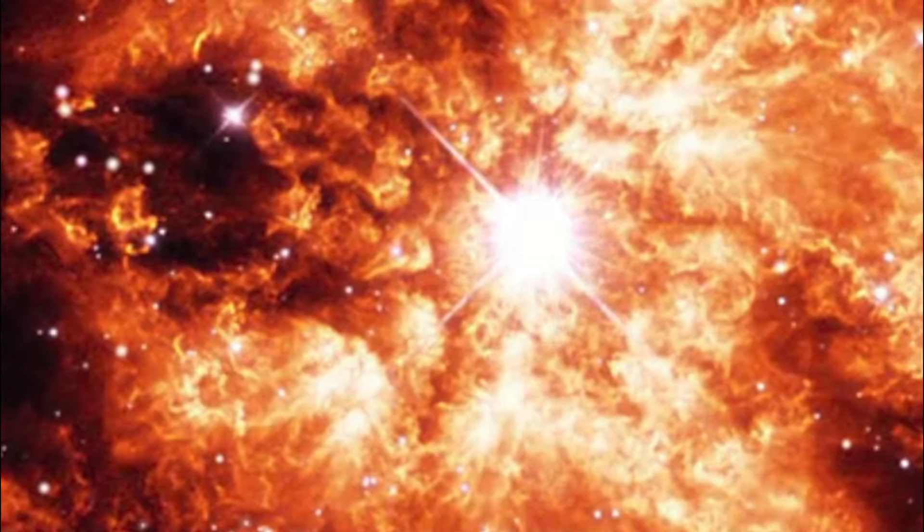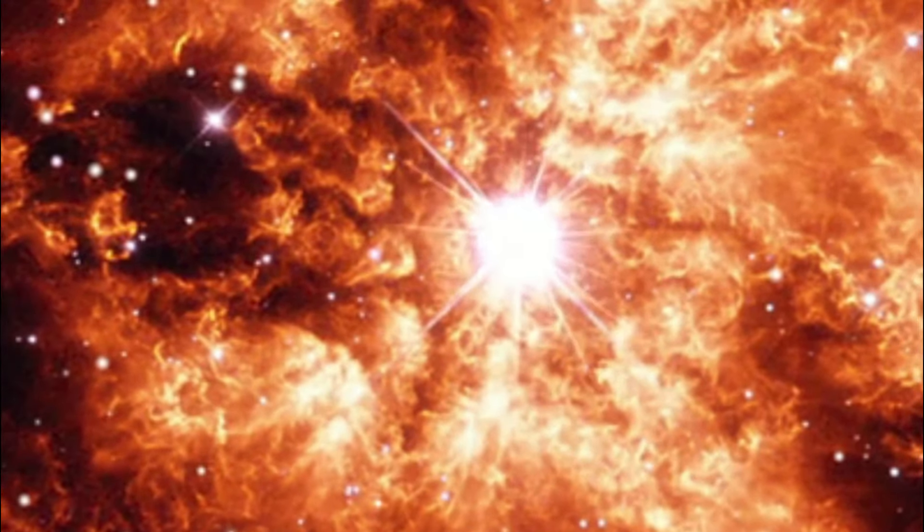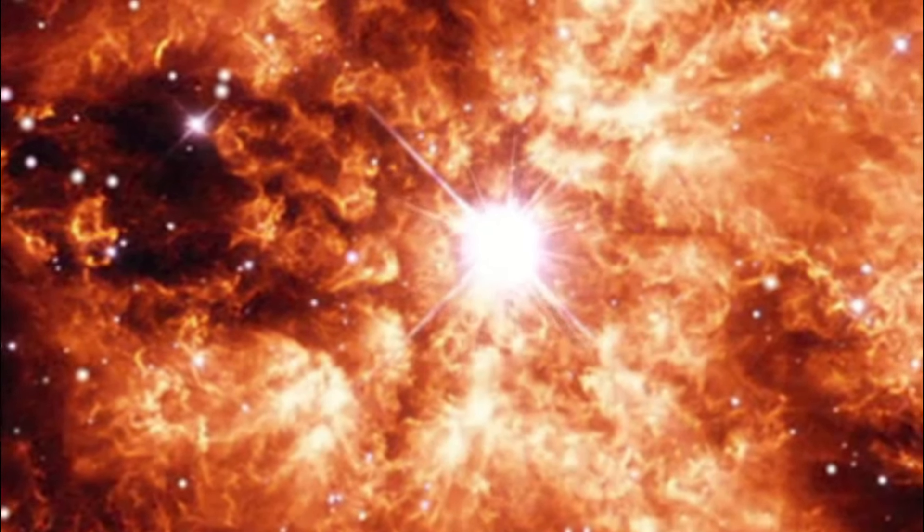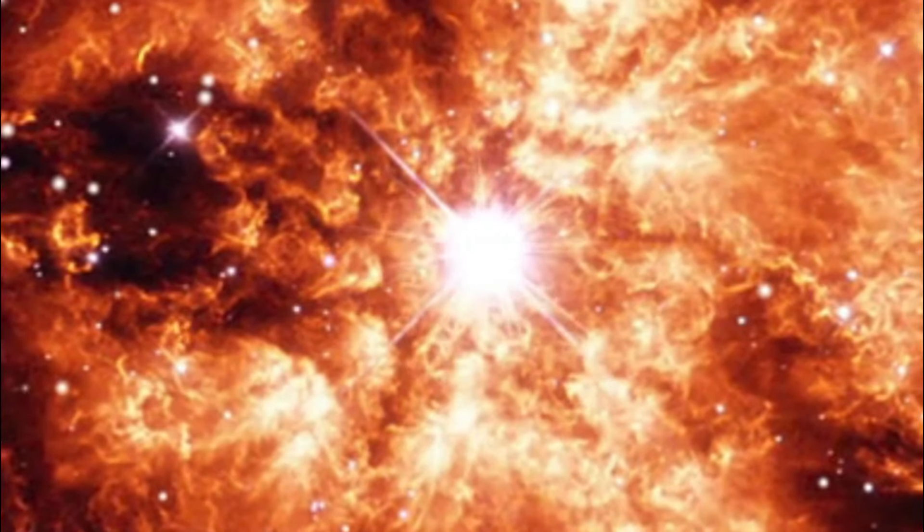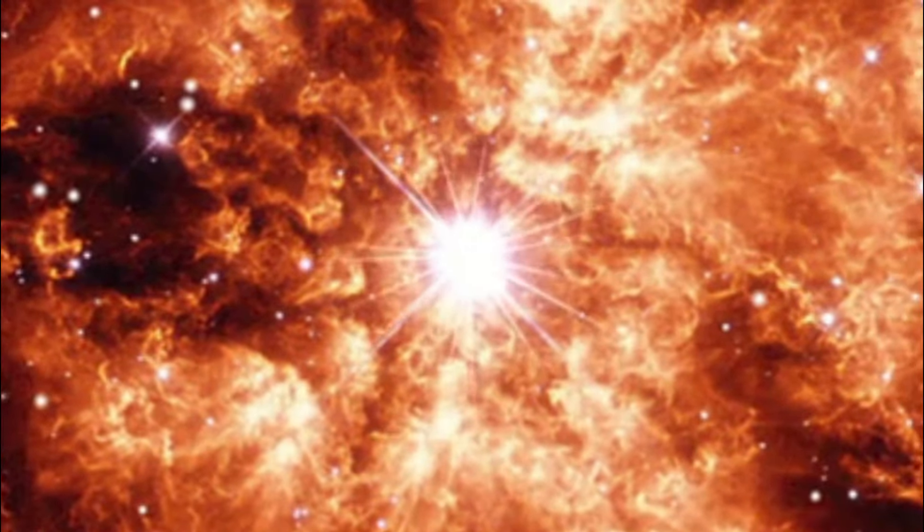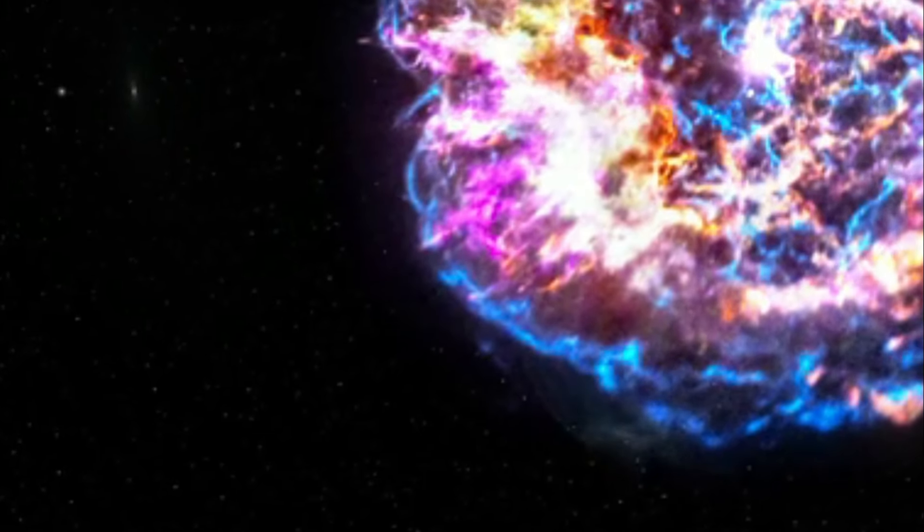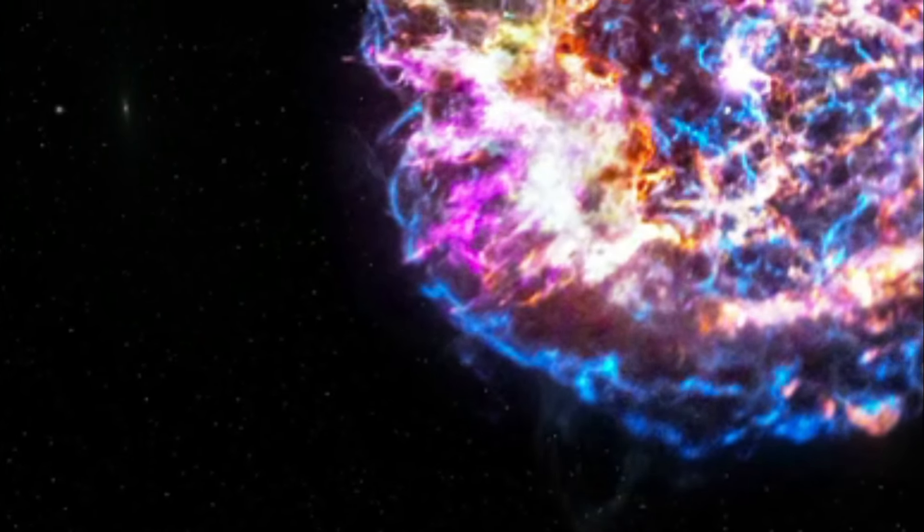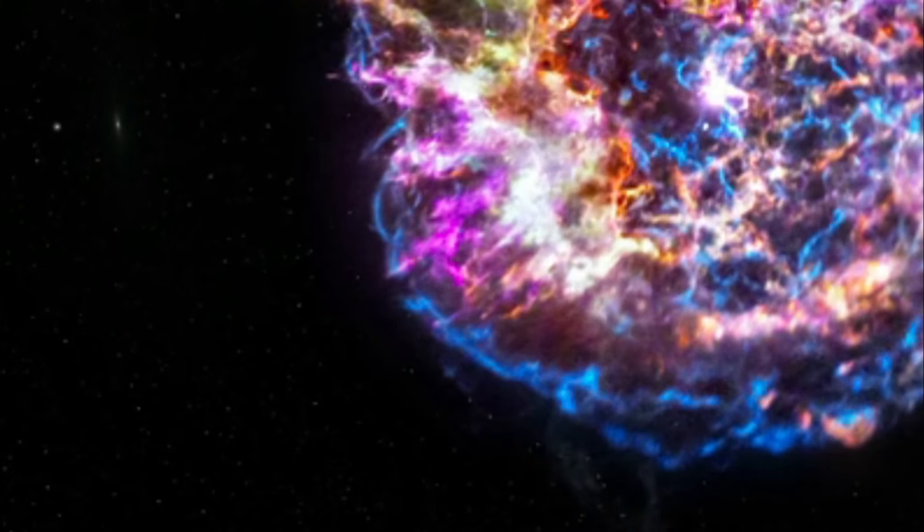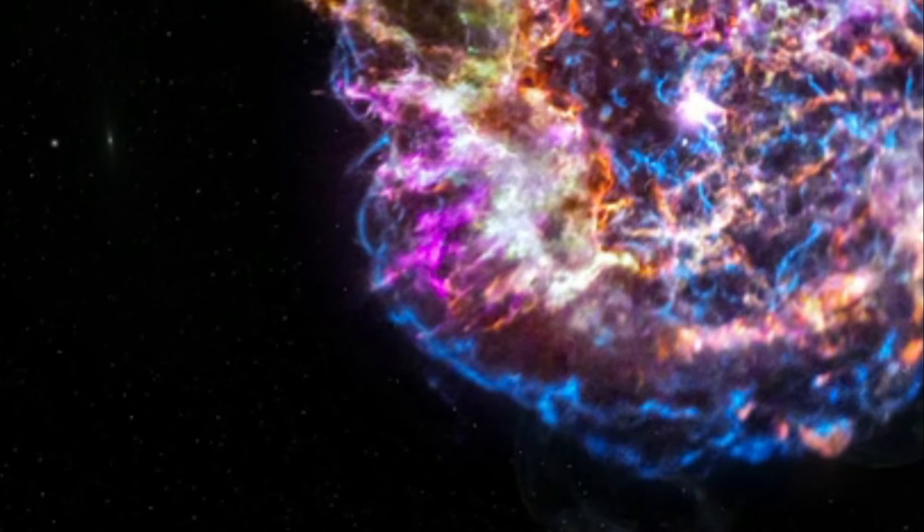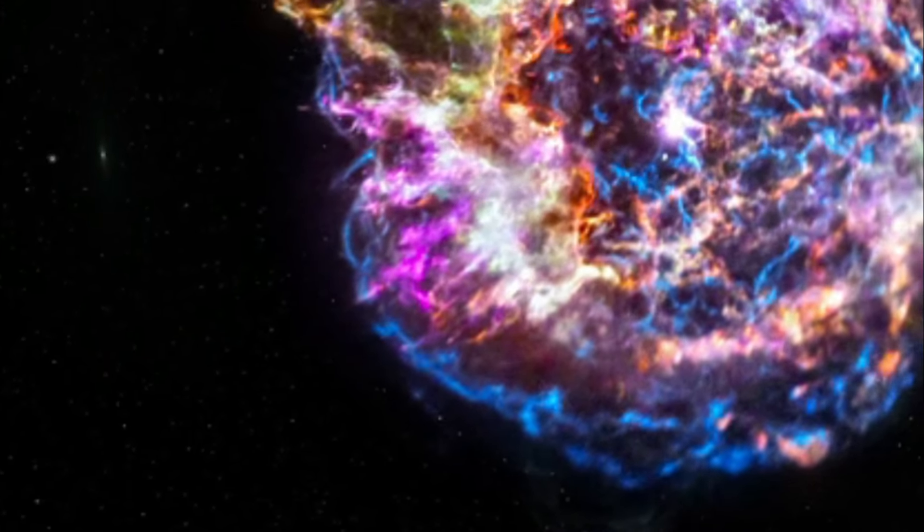Webb began science observations in July 2022, and the Webb observations behind this work were taken on July 16, making the SN 1987A remnant one of the first objects observed by Webb. The team used the medium-resolution spectrograph mode of Webb's MIRI mid-infrared instrument, which members of the same team helped to develop.